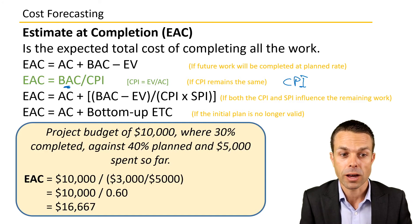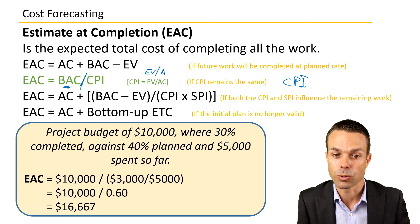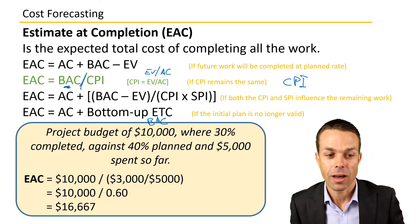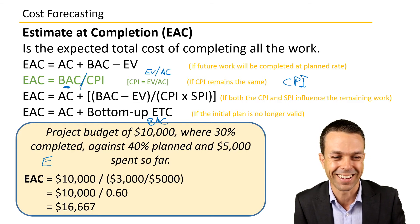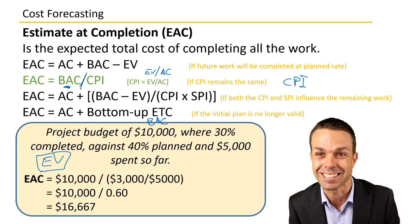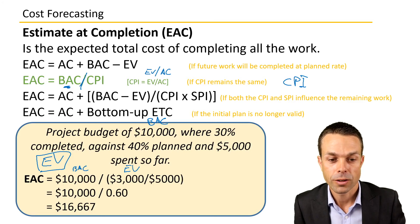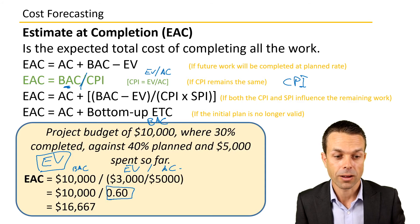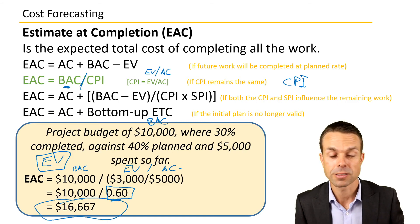The second EAC formula is BAC divided by CPI, where CPI equals earned value divided by actual cost. Our budget at completion is $10,000 and our earned value is $3,000. So CPI = EV / AC = $3,000 / $5,000 = 0.6. Then EAC = $10,000 / 0.6 = $16,667.